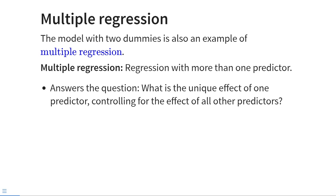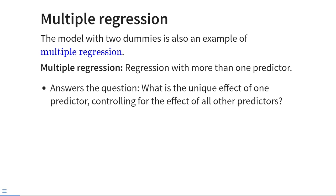That model with two dummy variables is also an example of what we call multiple regression. The definition of multiple regression is just regression with more than one predictor. It answers the question: what is the unique effect of one predictor controlling for the effect of all other predictors?